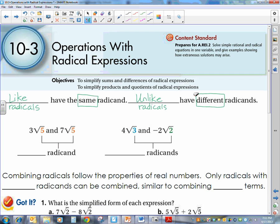Unlike radicals have different radicands. So here's some examples. Remember the radicand is what's underneath the radical symbol. So these both have a 5. They have the same radicand, and so this is an example of like radicals. This radicand is a 3, this radicand is a 2. Those are different radicands, so they are unlike radicals.